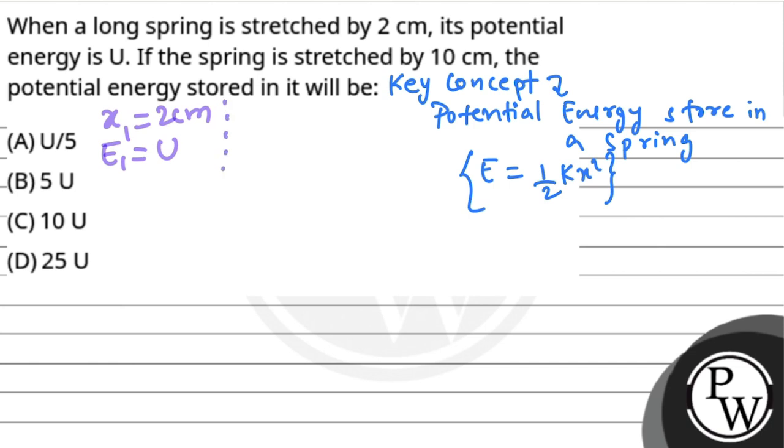In the second case, when the spring is stretched by 10 cm, x₂ equals 10 cm. Then the energy E₂ is what we need to find. So let's put the values in the formula.